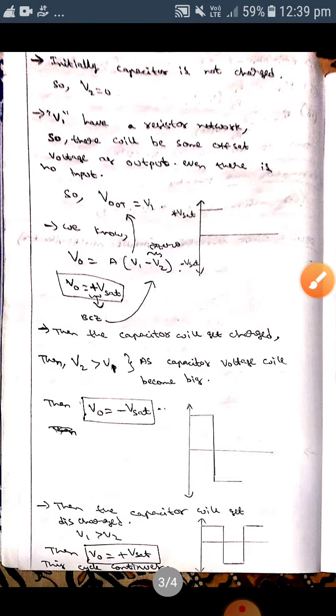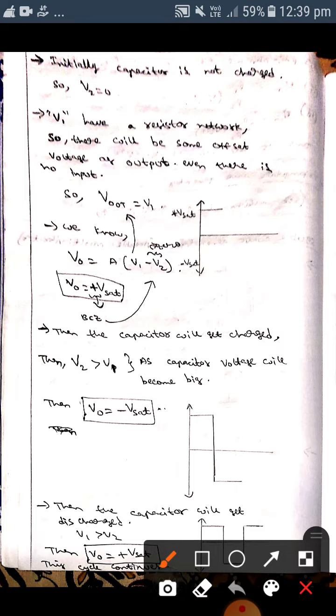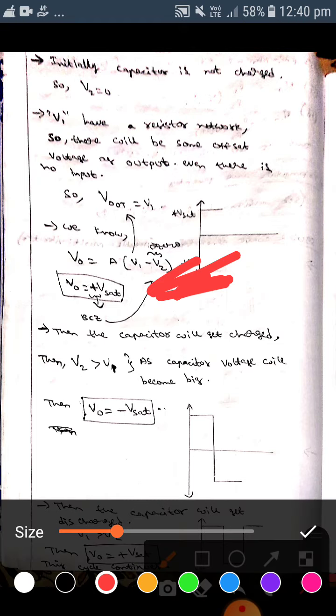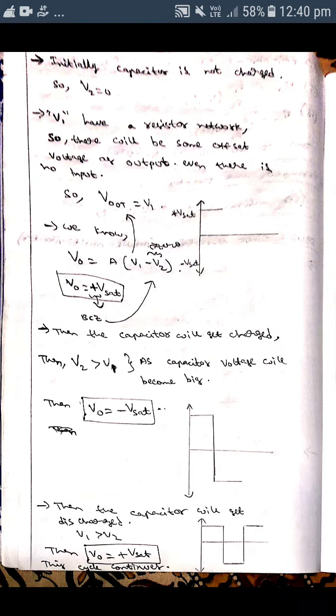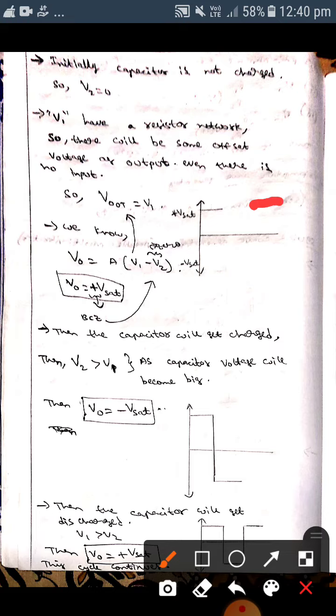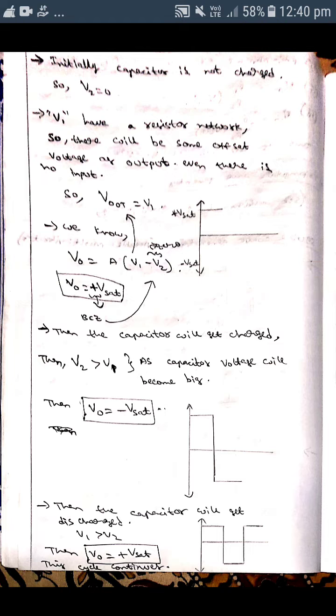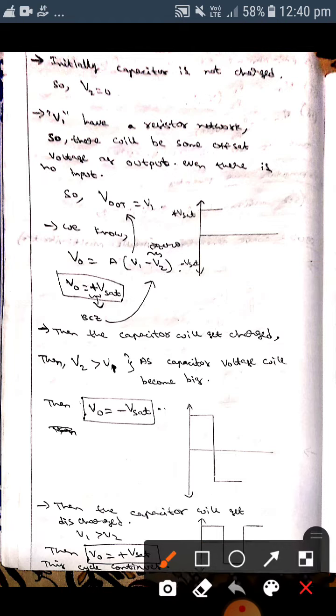Then we know that V0 is equal to A times V1 minus V2. As the capacitor is not charged, then V1 will be greater than V2. If V1 is greater than V2, then the output value will be positive, so we can say that V0 is equal to plus Vsat. So the waveform will be like this in the plus Vsat. Then after this,